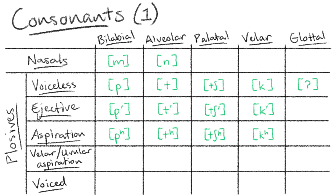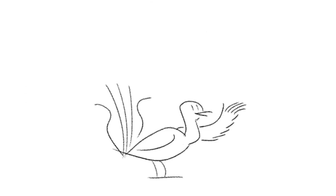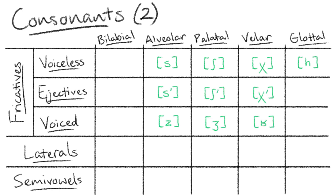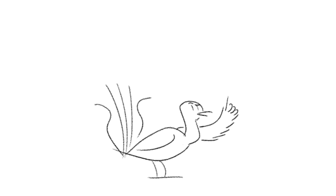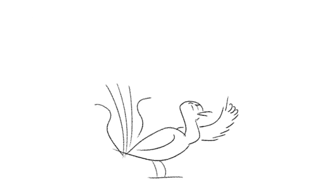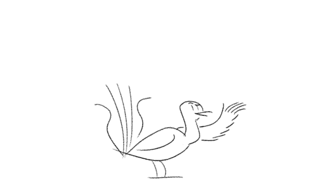All, apart from the palatal, have variants with velar aspiration, and the bilabial and velar consonants each have a voiced variant. Onto the second chart: there are three fricative consonants for all places of articulation apart from the bilabial, and there are distinct voiceless, ejective, and voiced variants for each of them as well. And finally, there's the alveolar lateral approximant and the two semivowels. I do know that technically these are affricates and these are uvular consonants, but I needed to simplify this chart so that I would be able to draw it, and native speakers would still be able to understand you anyway.